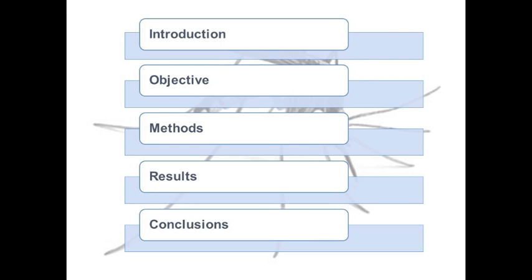First, I will give you a short introduction about malaria in El Salvador, and then I will speak about geographical information systems, also known as GIS, as a tool for building risk maps. Then I will tell you the purpose of this work and the several steps to generate the GIS-based map of malaria risk. After, I will show the main results and finally summarize the conclusions.